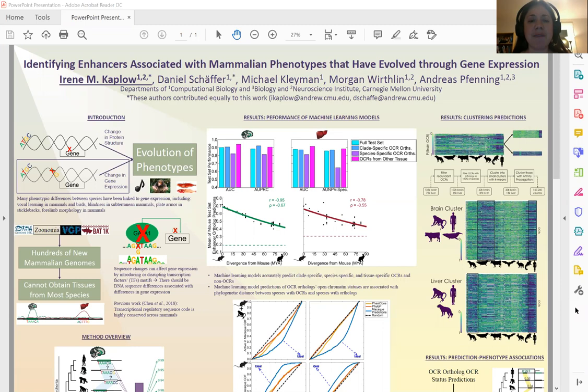The work I will be presenting today was a joint effort between me and Daniel Schaffer, a fantastic undergraduate in the Pfenning Lab. The project I will be describing is identifying enhancers associated with mammalian phenotypes that evolve through gene expression.